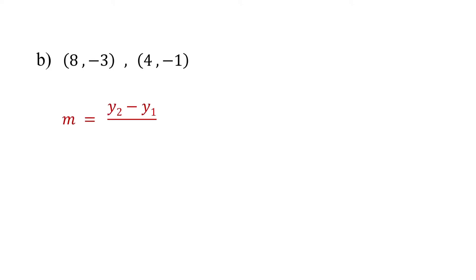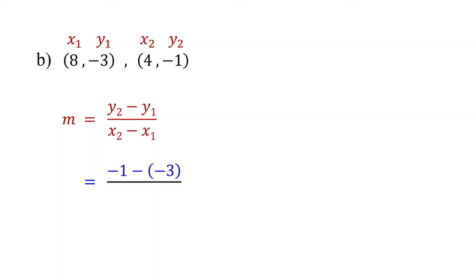First, find the slope. Start by labeling the points. Then substitute the values into the formula: replace y2 with negative 1, y1 with negative 3, x2 with 4, and x1 with 8.